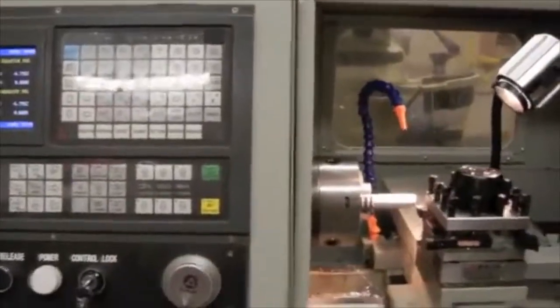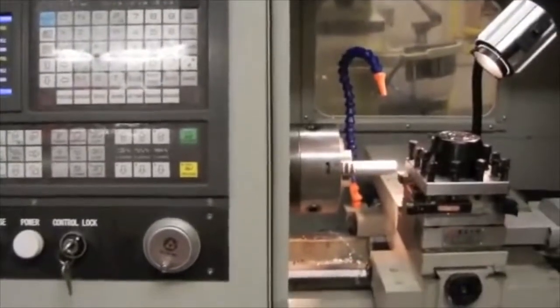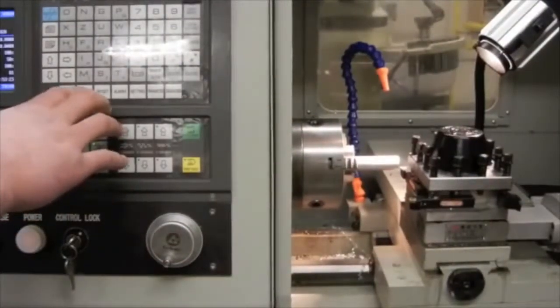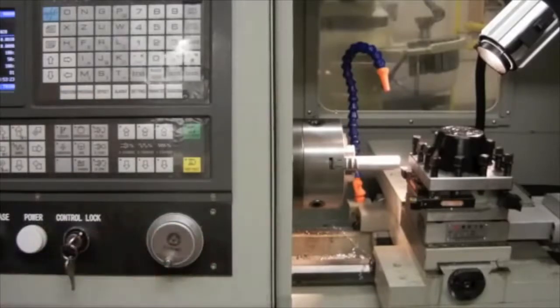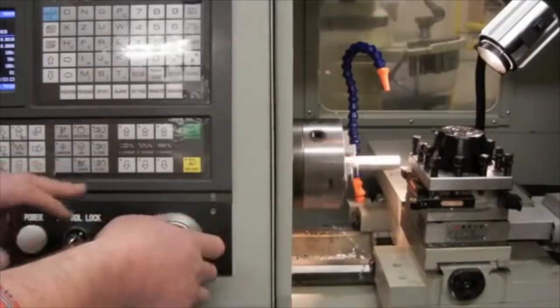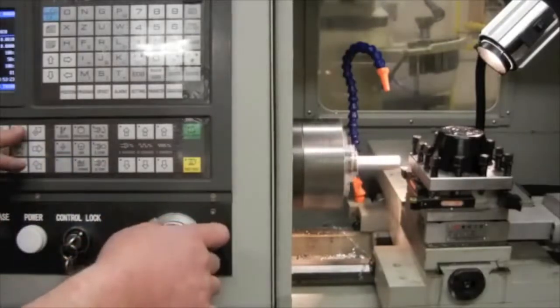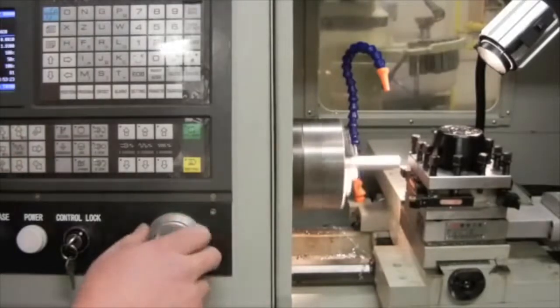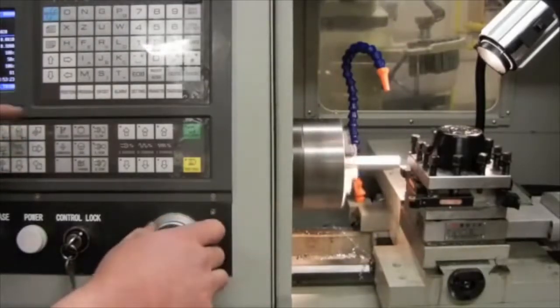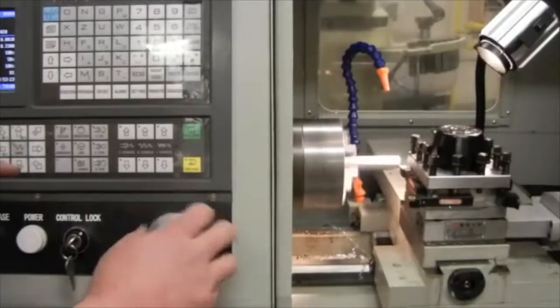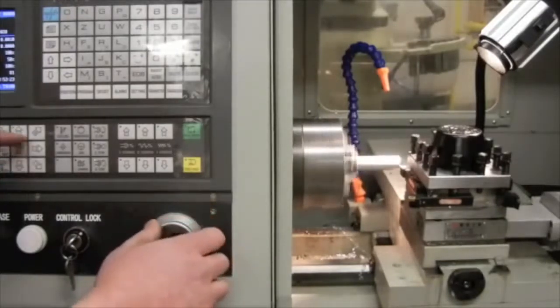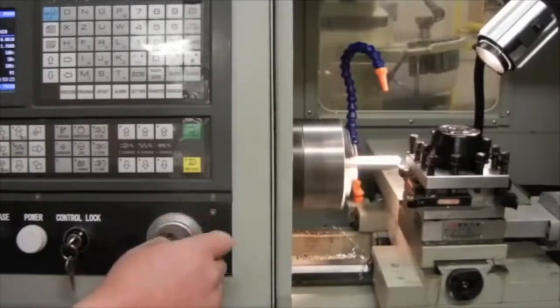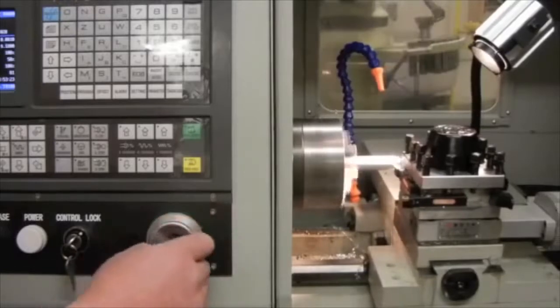We're now going to go through the same process and do a light turning pass. So I go back to program state, use MPG handwheel, start my spindle, and I'm going to progress inward and take a very light pass on the material. And I'm going to turn probably about a half inch or so.